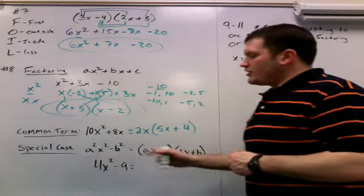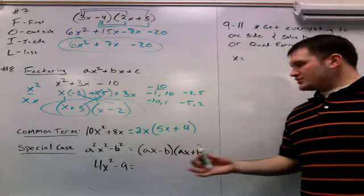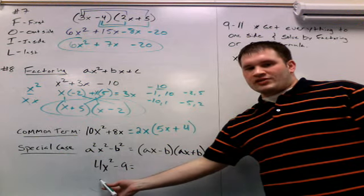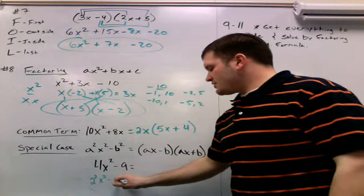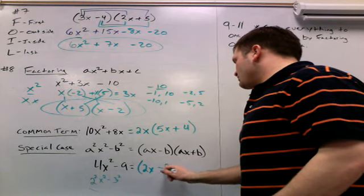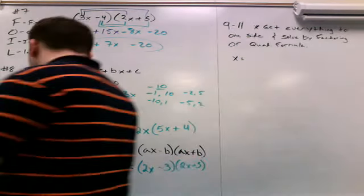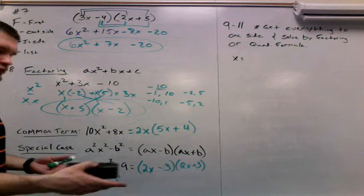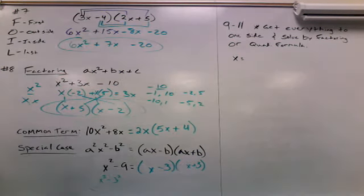The last type of factoring is special case factoring. This is when you have a squared x squared minus b squared, which factors into ax minus b times ax plus b — called the difference of squares. For example: 4x squared minus 9. The number 4 is something squared — that something is 2. And 9 is something squared — that something is 3. So the factors are 2x minus 3 and 2x plus 3. If there's no number in front of x, you treat it as 1 squared, so you'd just write x minus 3 and x plus 3. Hopefully that clears that up.